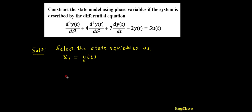Next, I need to select X1-dot, which is d/dt of X1, and X1-dot can be represented as X2. So X1-dot equals d/dt of y(t). If X1 is equal to y(t), then X1-dot is equal to d/dt of y(t).